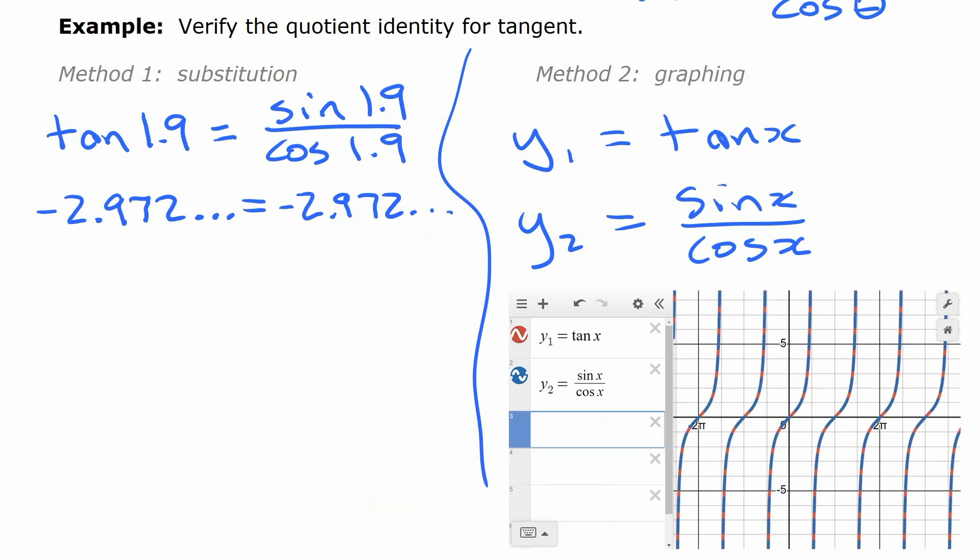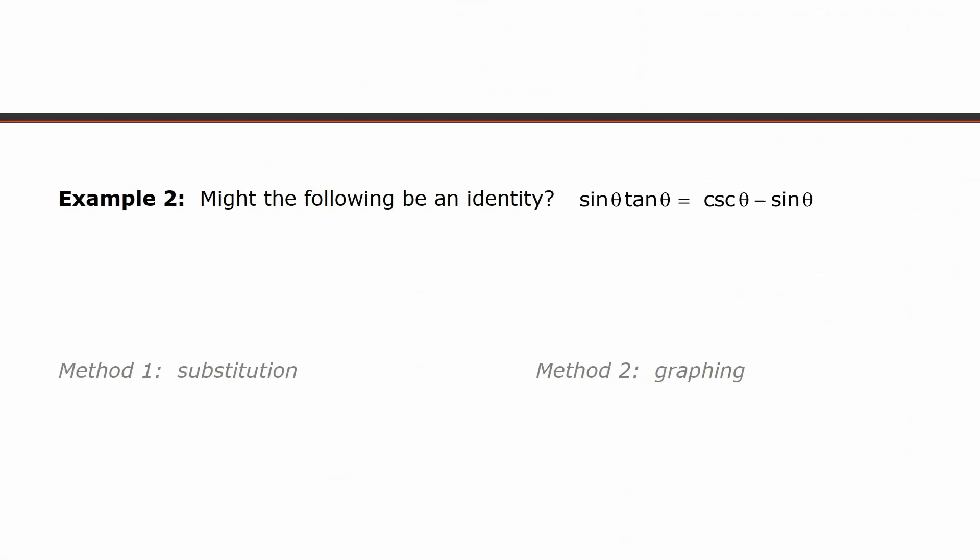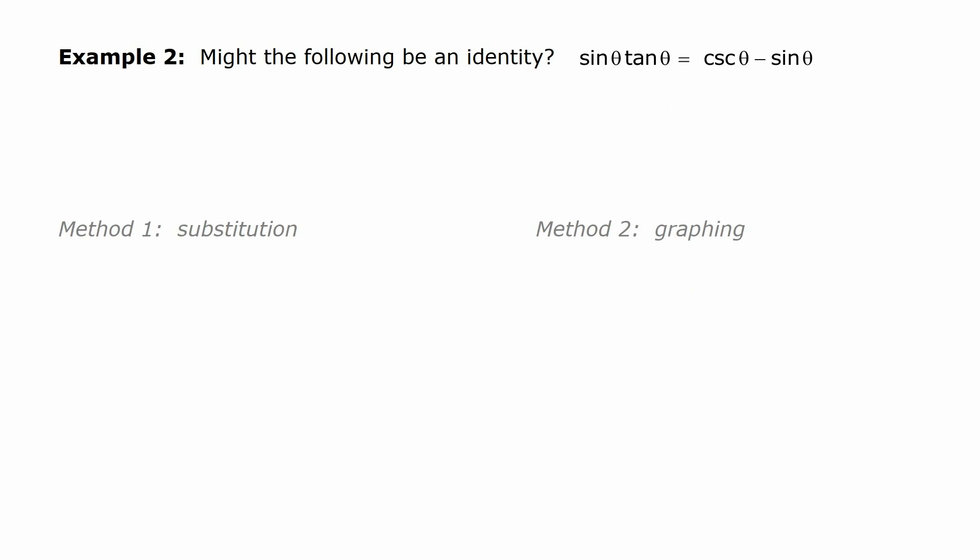All right, let's look at another example. So here we have something, and we're going to look at whether it could be an identity. So what we can do is verify, and if it comes up that our verification is a no, then we know that it's definitely not an identity. And if our verification comes up as yes, then we know it might be an identity. It's not that it's for sure an identity. For that, we would have to go through and prove it.